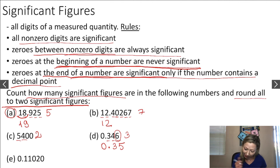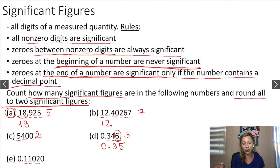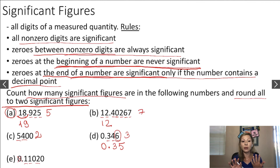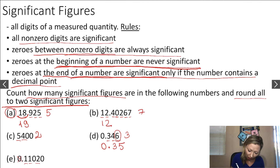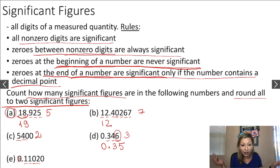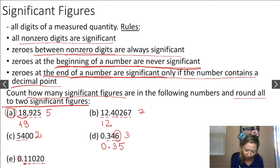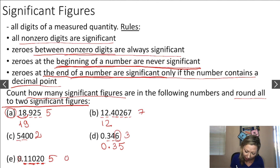What about example E? We have 1, 2, 3 non-zero digits and several zeros. The zero at the beginning is not significant. The zero between the non-zero digits — between the 1 and the 2 — is significant, because zeros between non-zero digits are always significant. And the zero at the end: zeros at the end are significant only if the number contains a decimal point, and we do have a decimal point. So in total we have 1, 2, 3, 4, 5 significant figures. Rounding to two significant figures gives 0.11.